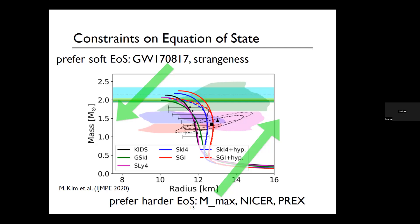At least two neutron stars over 1.4 solar masses have been observed, so the 1.4 solar mass benchmark is no longer the only constraint for the equation of state — we can now also use the heavy neutron stars. Many researchers working on the equation of state focus on pulsar observations. Time is over; let us thank the speaker again. This morning session is over and we're going to have lunch.